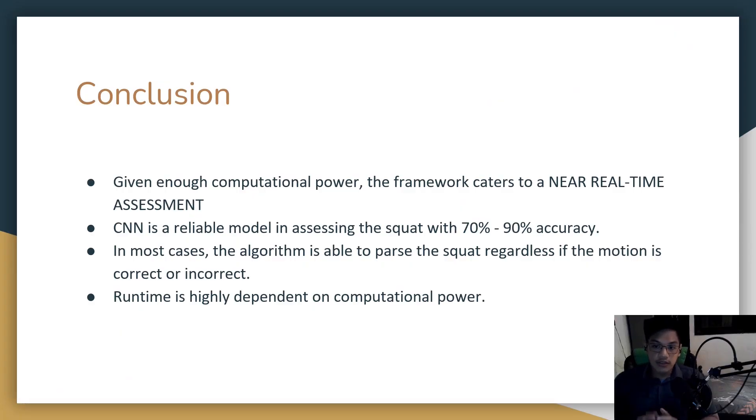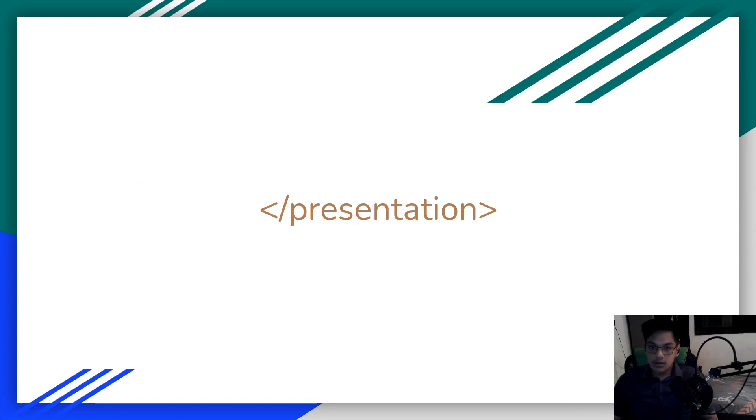In conclusion, given enough computational power, the framework caters to a near real-time assessment. We were also able to propose a system that collects input from just a camera sensor, which makes the whole thing purely computer vision based, so producing this system is cheap and is highly marketable. CNN is a reliable model in assessing the squat with 70% accuracy on unseen data and 90% accuracy on seen data. In most cases, the algorithm is able to parse a squat regardless if the motion is correct or incorrect. And lastly, runtime is highly dependent on computational power. That is SmartSquat. Thank you for watching.